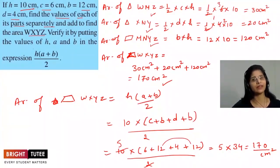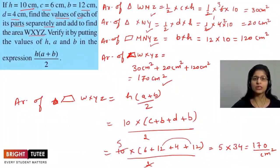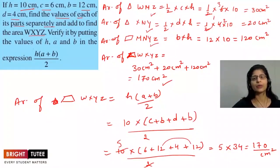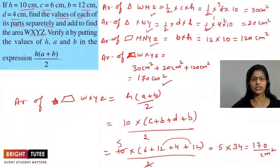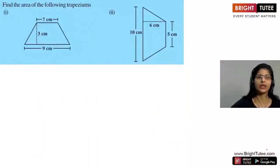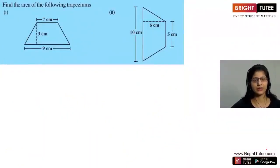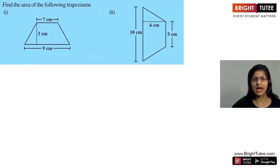The formula is verified for this trapezium. The concept of how to find the area of a trapezium is clear. Now we will practice questions. Find the area of the following trapezium — the parallel sides are 9 and 7, and the height is given as 3.